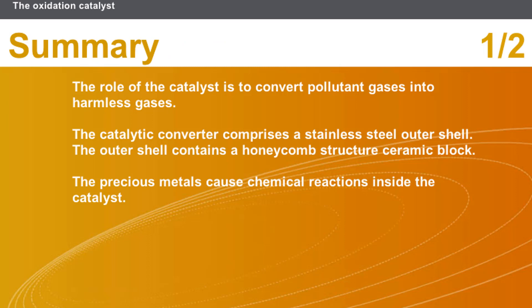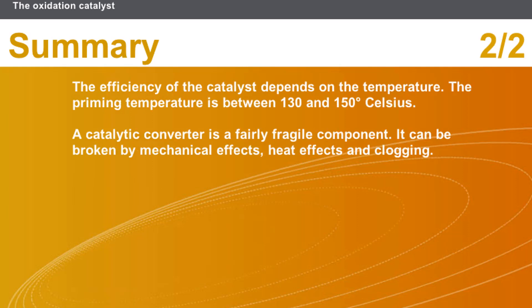In this section we covered the following points: The role of the catalyst is to convert pollutant gases into harmless gases. The catalytic converter comprises a stainless steel outer shell containing a honeycomb structure ceramic block. Precious metals cause chemical reactions inside the catalyst. The efficiency of the catalyst depends on temperature, with a priming temperature between 130 and 150 degrees Celsius. A catalytic converter is a fairly fragile component that can be broken by mechanical effects, heat effects, and clogging.